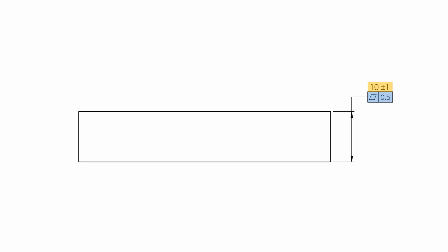Hi there, this is Ayus from Master Mechanical Design. Let's start this lesson with a very simple but most confusing question of GD&T. Let's say we have a plate thickness of 10 mm plus minus 1 mm and a flatness tolerance of 0.5 mm is applied to this thickness dimension, not to any individual surface.